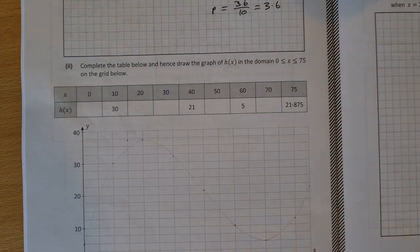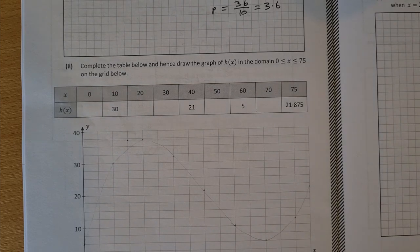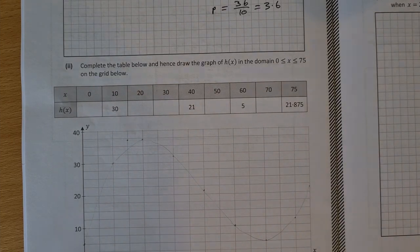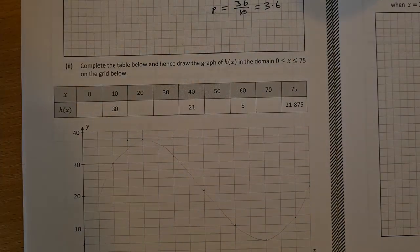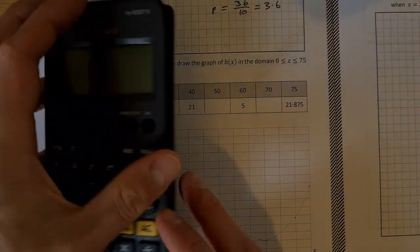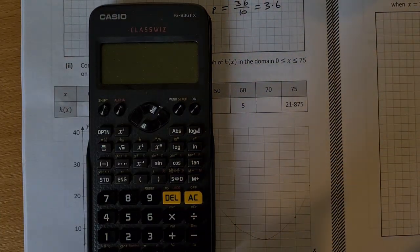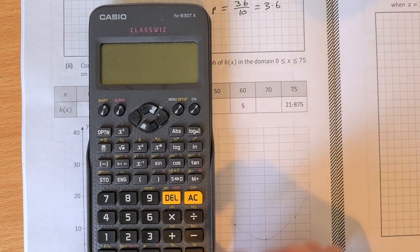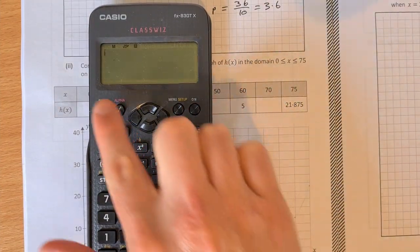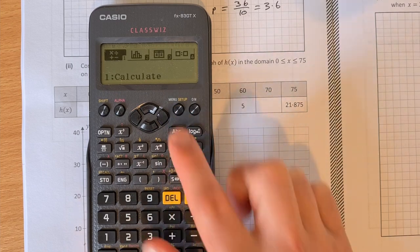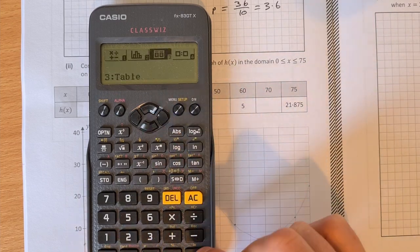Part 2. Complete the table below and hence draw the graph of the function h of x in the domain x between 0 and 75 on the grid below. For this, you're going to use your calculator. So I'm going to go through how to do it on your calculator here. So we have to put it in functions mode. So we press setup and go across to table and press equals.